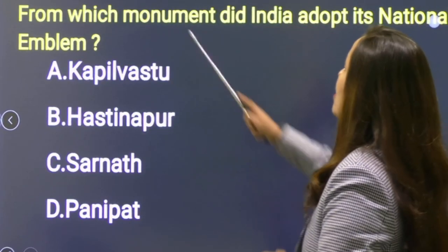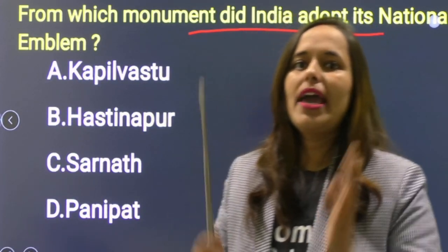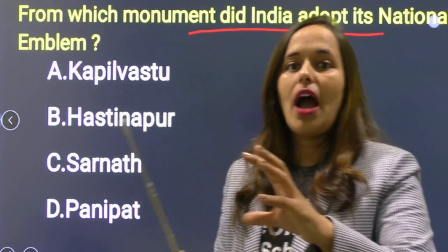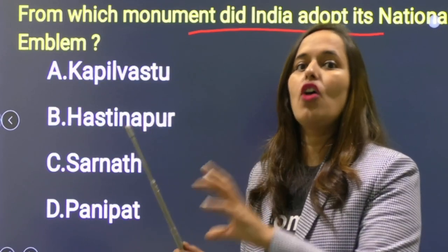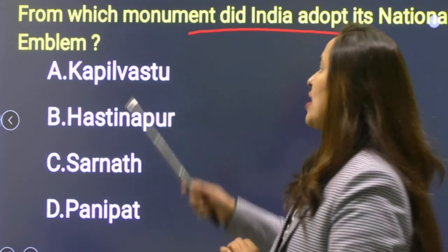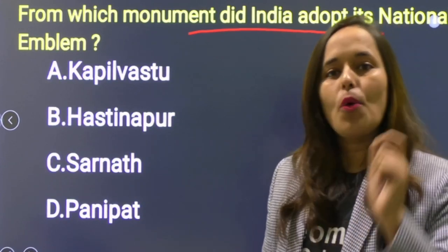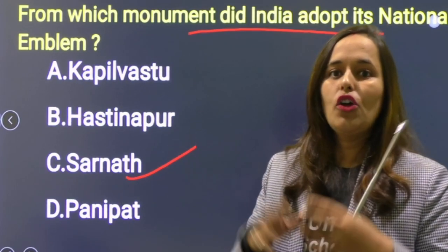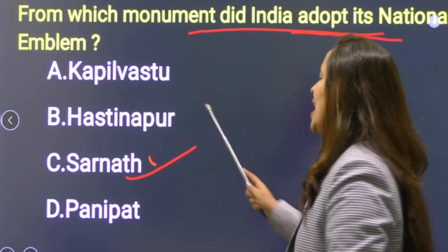Next: From which monument did India adopt its national emblem? हमारा national emblem में lions हैं, galloping horse है, Ashoka Chakra है, और bull भी है। यह Ashoka Lion से लिया गया है — Sarnath से। Correct answer: Sarnath.